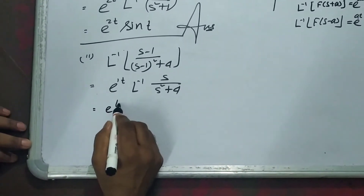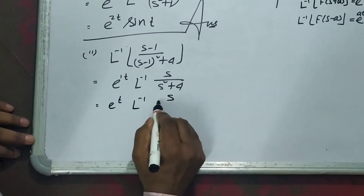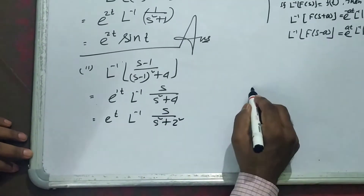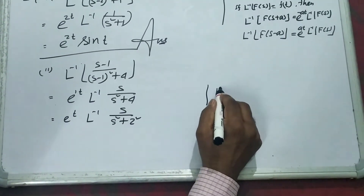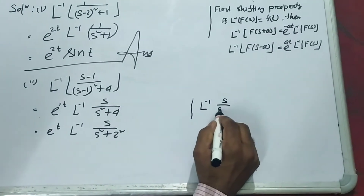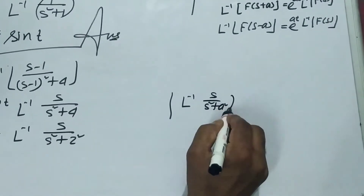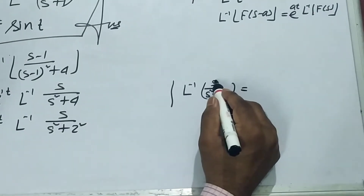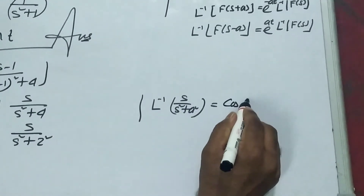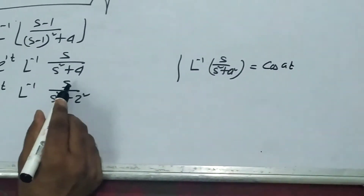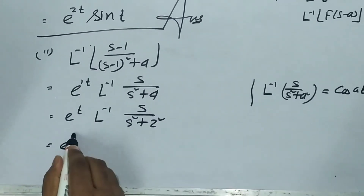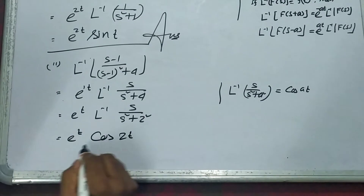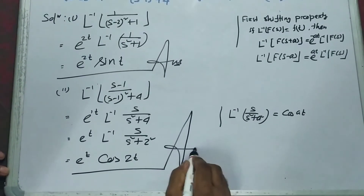So we get e to the power t times L inverse of s by (s squared plus 4), which is s squared plus 2 squared. Recalling the formula: L inverse of s by (s squared plus A squared) equals cos(At). Since the numerator is s, this gives cos(2t). So the answer is e to the power t times cos(2t).